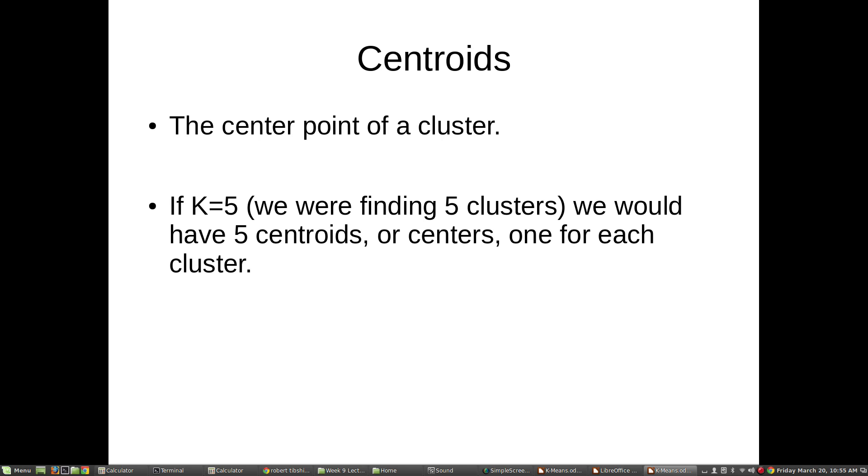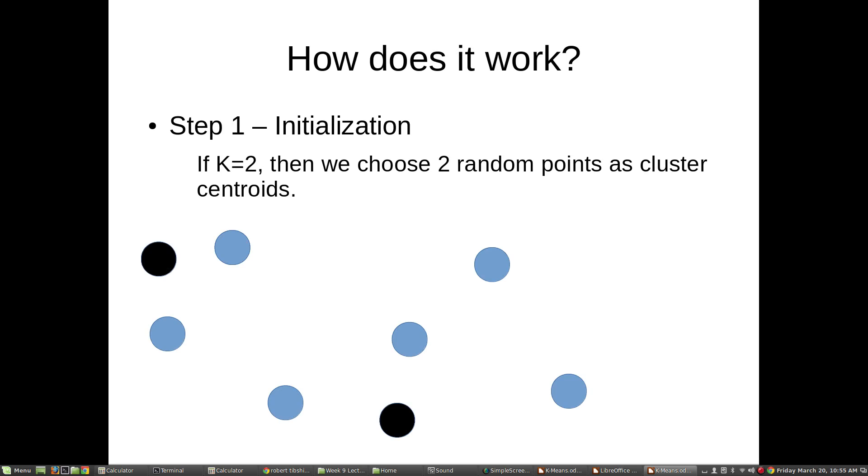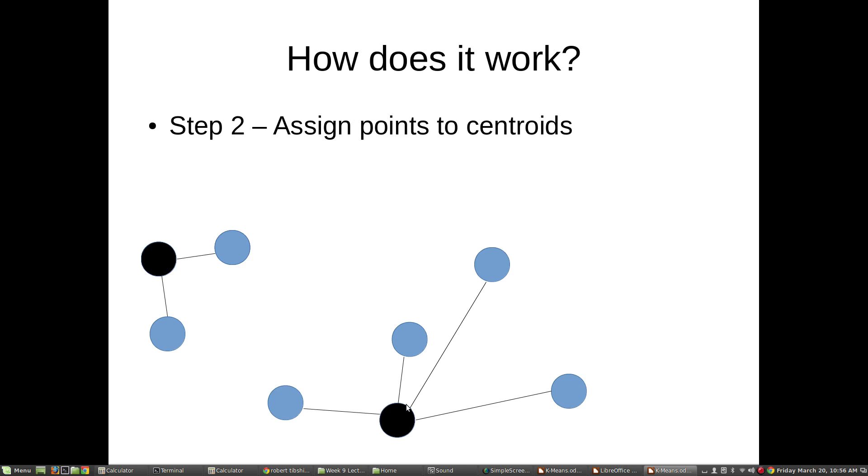Let's talk about how k-means works. Imagine the blue circles in my data set here are data in two-dimensional space. If we had k equals two, we were going to find two clusters. What we would do is choose two random points as cluster centroids and just put them anywhere. You can see here we've put them as the black dots.